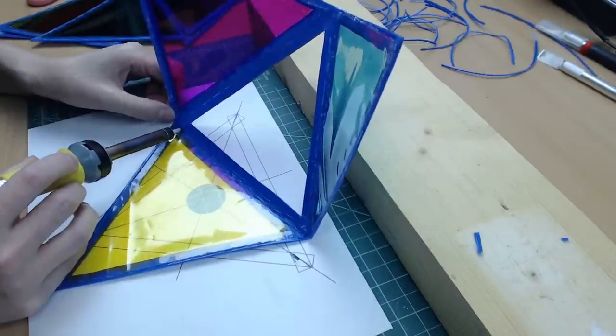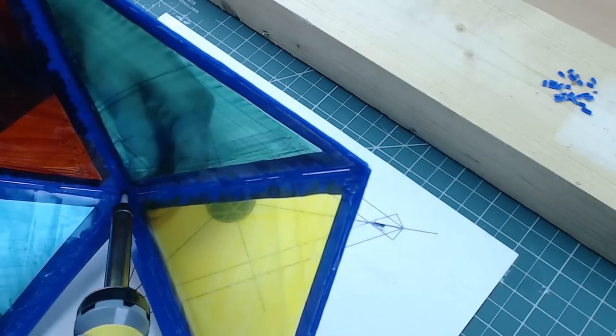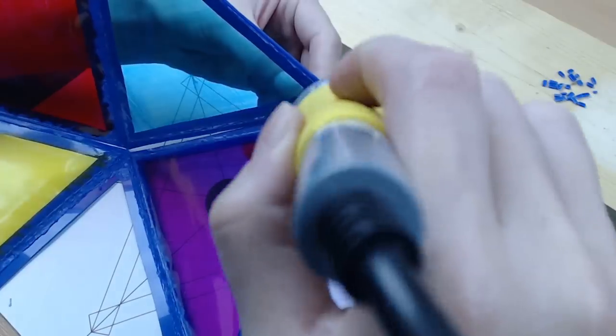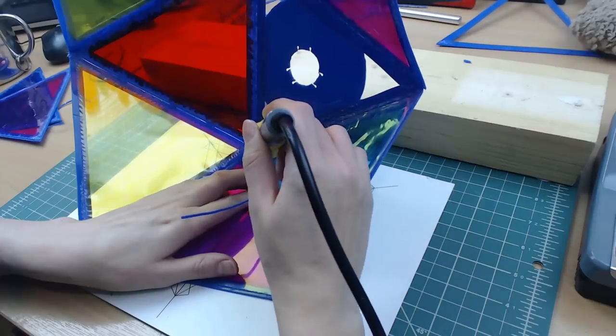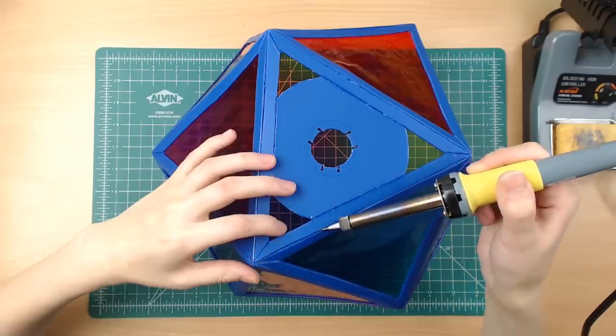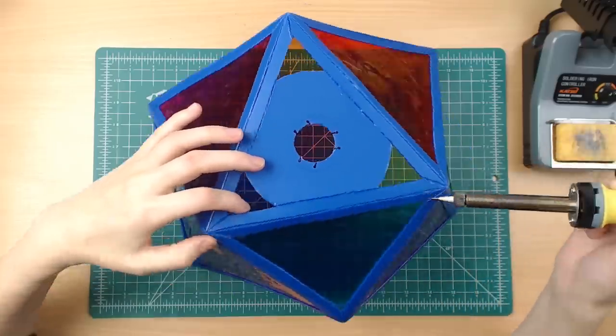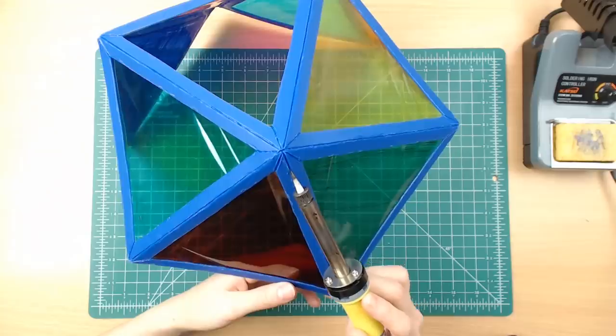Then I just carried on adding the triangles to form the top and the bottom half of the icosahedron. Before joining the halves, I slid the soldering iron tip over all of the joints on the outside, to make them stronger.